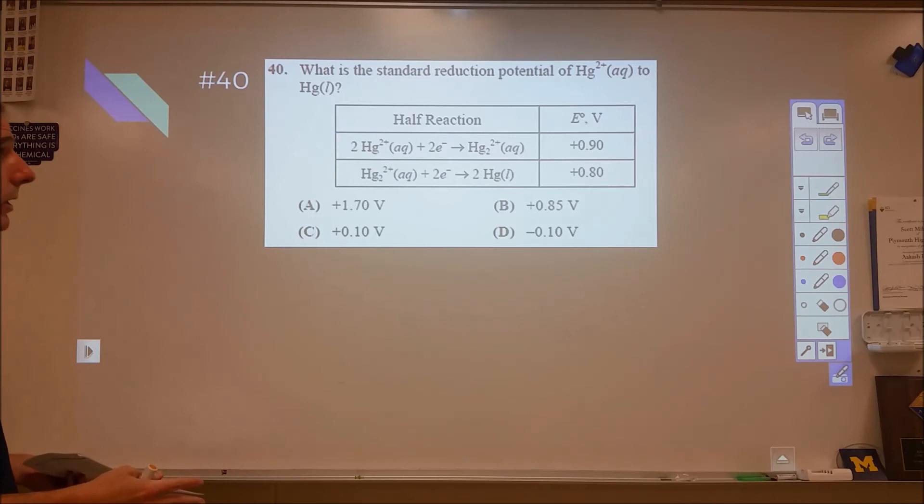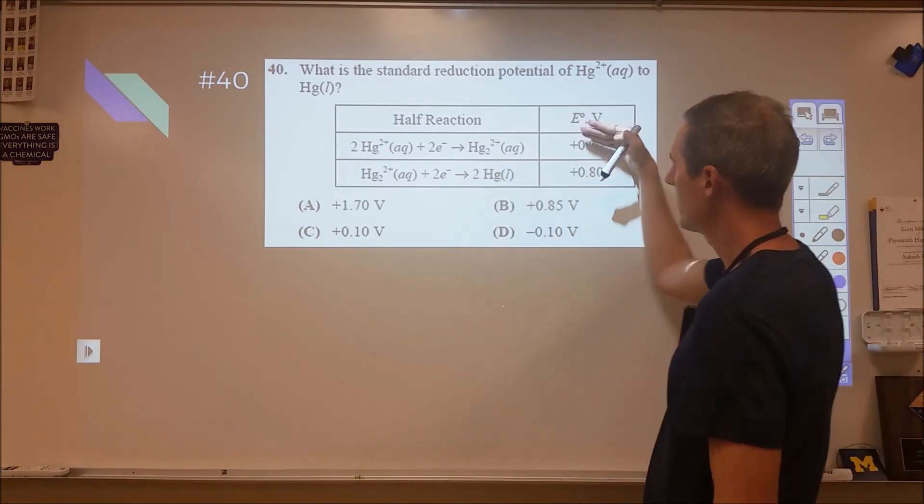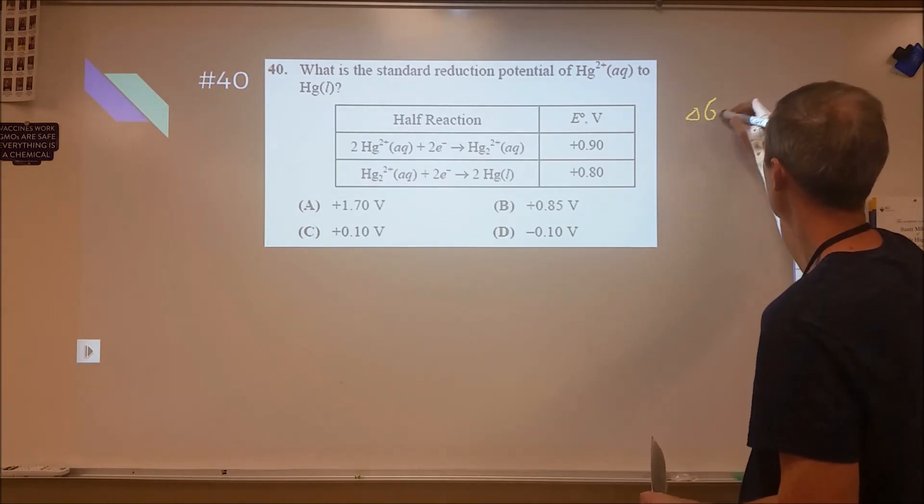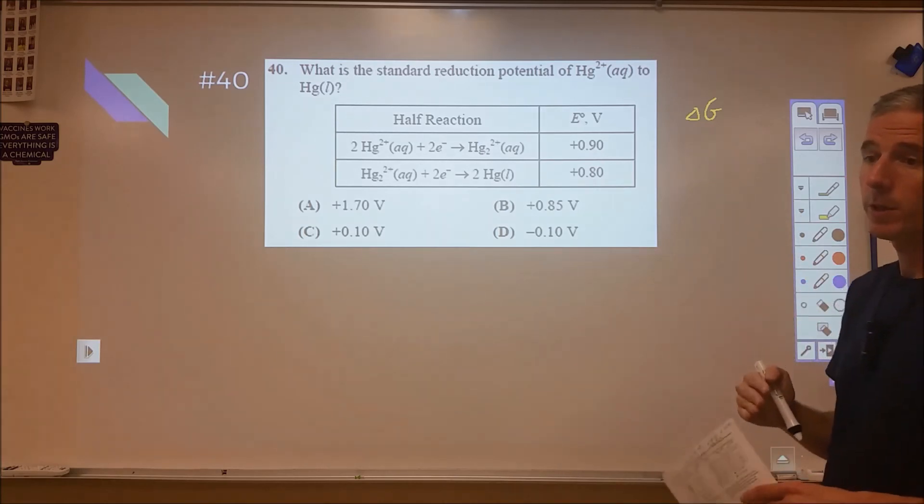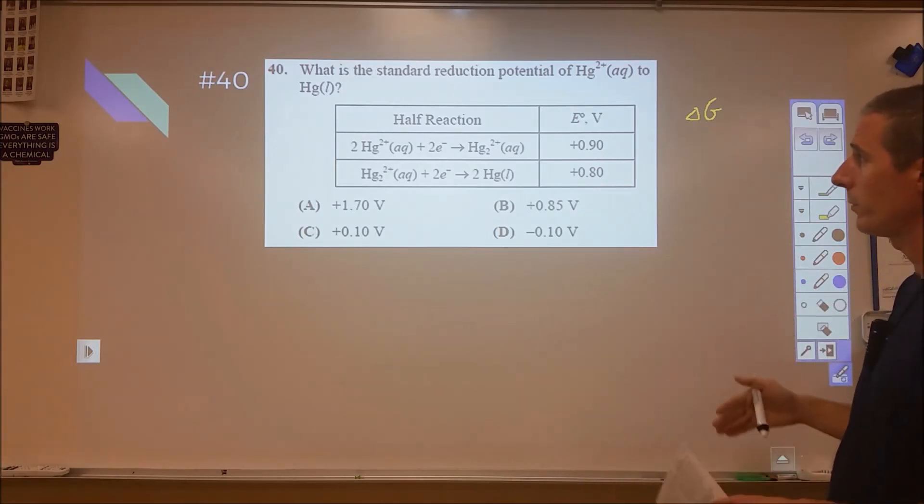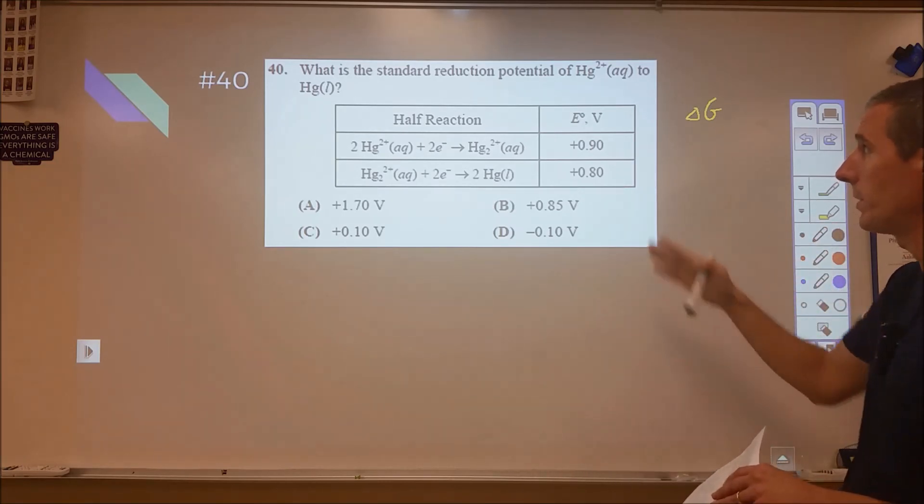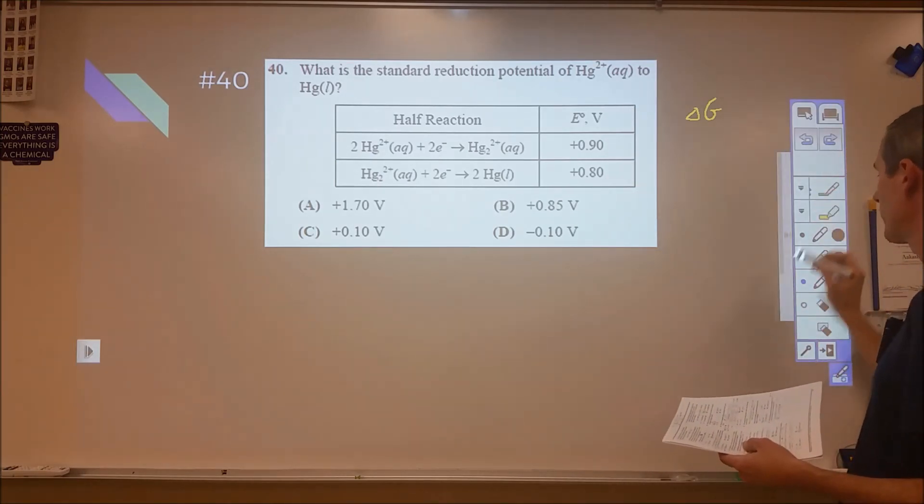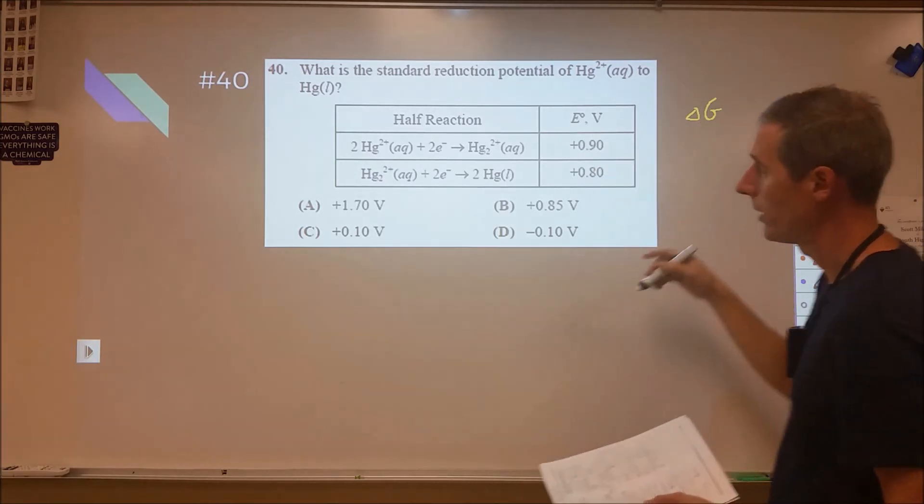And the last one, what's the standard reduction potential for mercury two plus to mercury? This is a little challenging because it's tempting to just try and blend these two together. The fail-proof way that will always work is turn both of them into delta G's. You want to make them into delta G's because the delta G is a state function just like an enthalpy. We're very confident that we can add two things up that they'll go from start to finish and we won't have to worry about what happens in the middle. The same can't always be said with the voltages. It depends on the number of electrons. So, the fail-proof way is to just go from the voltage to the Gibbs free energy.